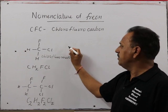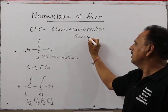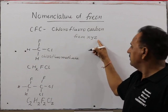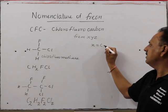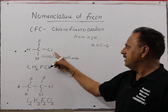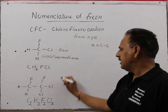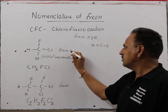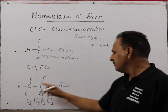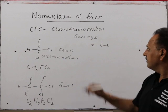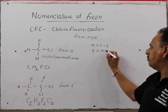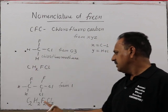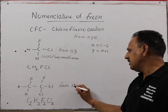In the Freon naming method, three numbers X, Y, and Z are used. X means the number of carbons minus 1. For one carbon, X is 0. For two carbons, X is 1. Y means the number of hydrogens plus 1. Here, 2 hydrogens plus 1 equals 3.